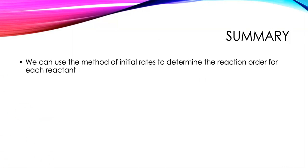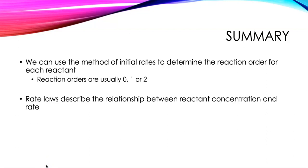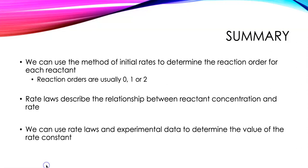Let's summarize what we've done in this webcast. We can use the method of initial rates to determine the reaction order for each reactant. The reaction orders usually work out to be 0, 1, or 2 for AP chemistry problems, and we have to do experiments to figure out the reaction orders. Rate laws describe the relationship where reaction orders give us the power to which each reactant is raised, and we use the rate law and experimental data to find the rate constant. We must check the overall reaction order to get the correct units for k.